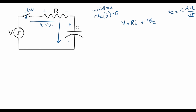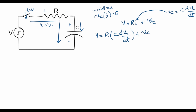Now we know that the current through the capacitor IC is given as C times dVC/dt, and in this circuit I is equal to IC. So the current that flows through the capacitor is the same as the current flowing through the resistor, so I can replace I with IC and write: V equals R·C·(dVC/dt) plus VC.